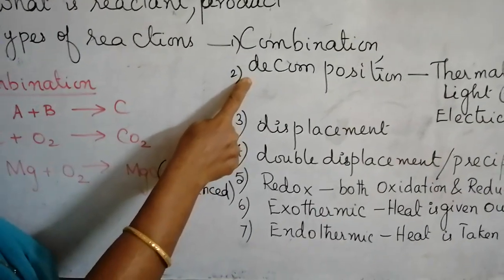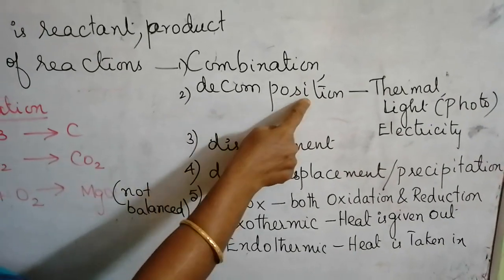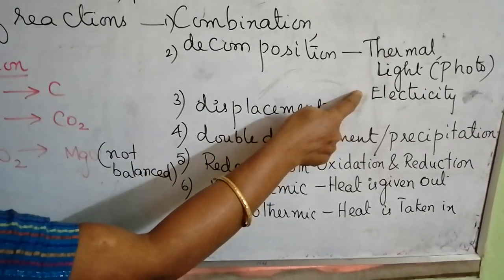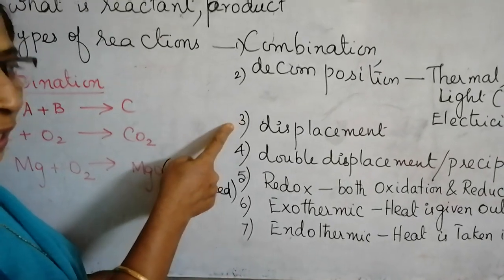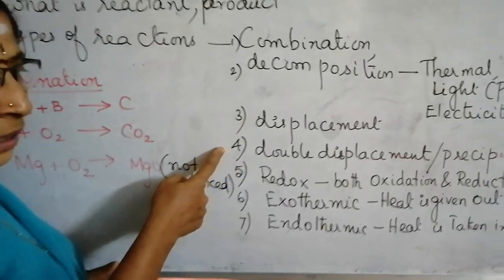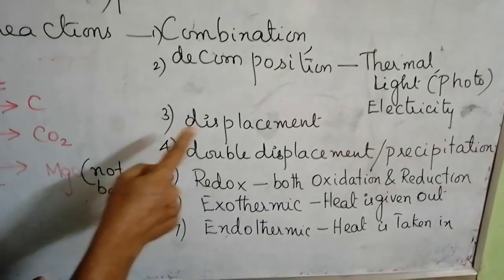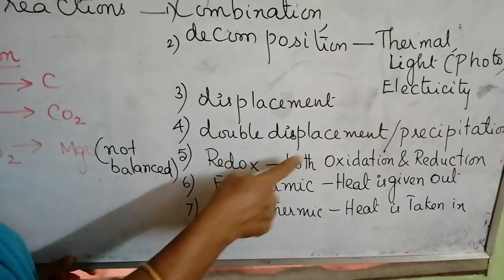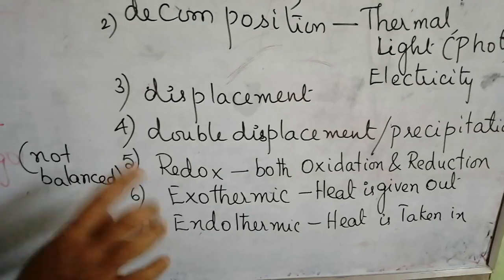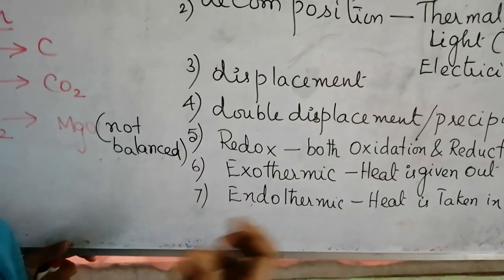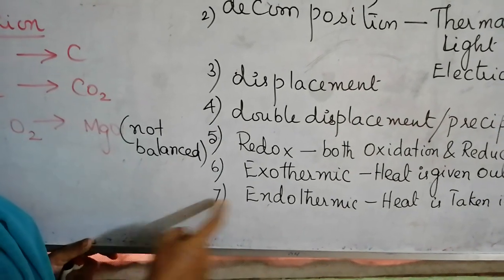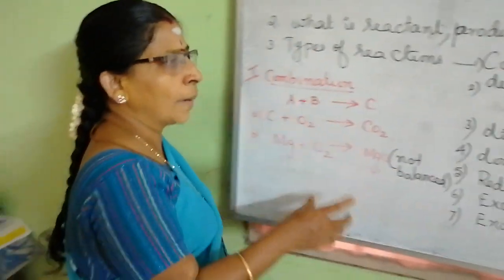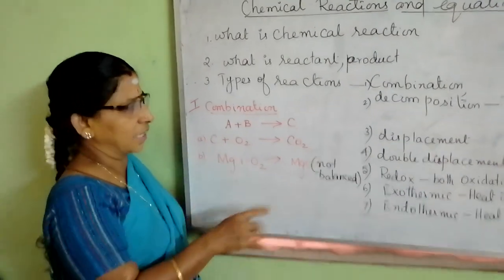Combination. Second one, decomposition. This decomposition can be brought out with the help of heat, with the help of light or with the help of electricity. The third type of reaction is called displacement reaction. Next fourth type, double displacement reaction or precipitation reaction. Fifth one is redox reaction. Both reduction and oxidation takes place simultaneously. Sixth one is exothermic reaction where heat is given out. Seventh one is endothermic reaction where heat is taken.